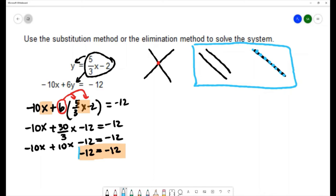And this final statement here is going to indicate to us which one of those special cases. So because our final statement is a true statement negative 12 does equal negative 12 that is a true statement. We know that we're in this case right here where the two lines are right on top of each other.